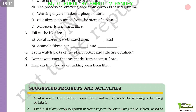Fill in the blanks: Plant fibers are obtained from cotton and jute. Animal fibers are silk and wool. From which parts of the plant are cotton and jute obtained? Cotton is obtained from the fruit (boll) of the plant, and jute is obtained from the stem of the plant. Name two items that are made from coconut fiber: mats and ropes.